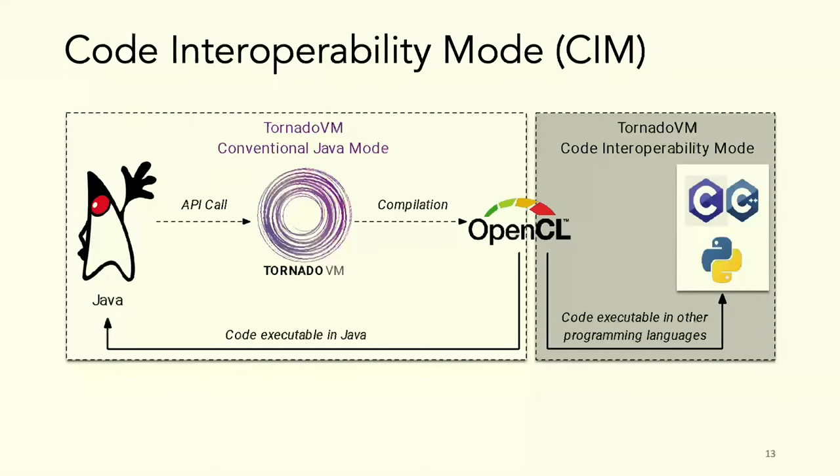What we are working on is a new mode in TornadoVM: the code interoperability mode, which facilitates this. If we see this figure on the left side, we have the Java application. It uses the API to pass bytecode to TornadoVM. TornadoVM performs JIT compilation and produces OpenCL, for example.